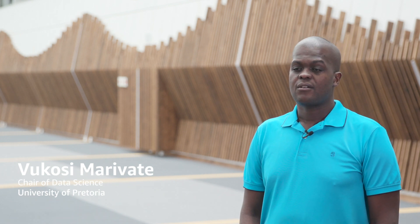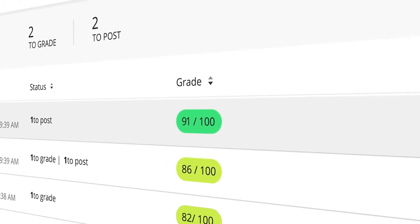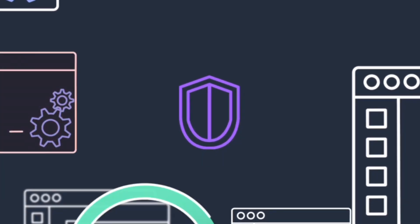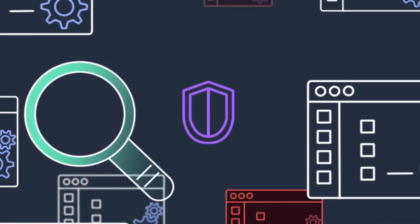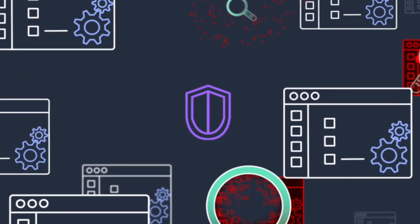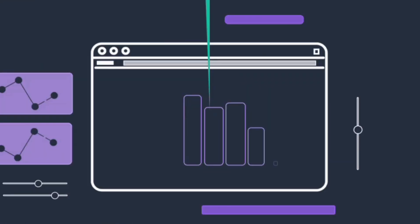I'm Dr. Vukwesi Marivate. I'm the chair of data science here at the University of Pretoria and I also run a group called the Data Science for Social Impact Group. The Data Science for Social Impact Research Group aims to look at how we can use data science techniques — whether it is statistics, mathematics, computer science, machine learning and artificial intelligence — to look at societal problems and come up with solutions for those.